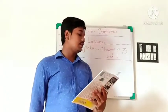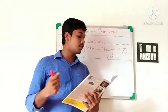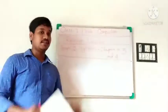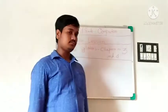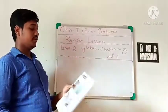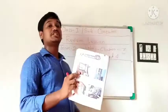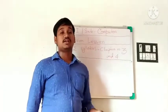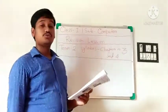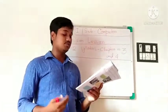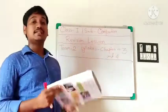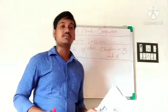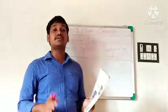Chapter number three: the uses of a computer. I have already discussed this chapter in the previous class. Look here — which picture is this? TV. This is a TV, used to watch movies. A music system is used to listen to music. A calculator is used to calculate. All these works can be done by one single machine.